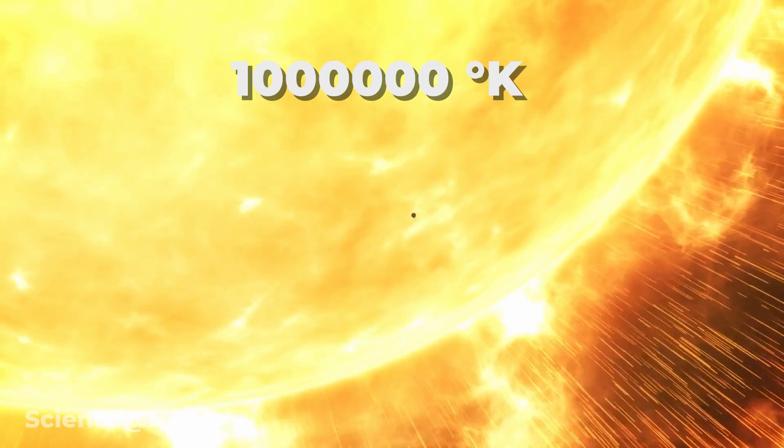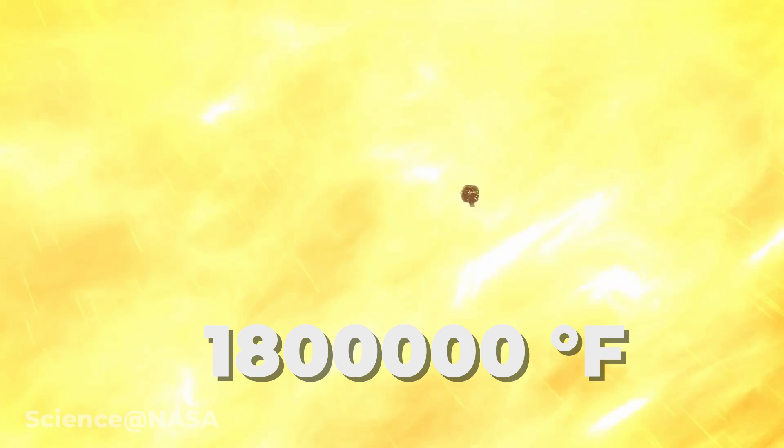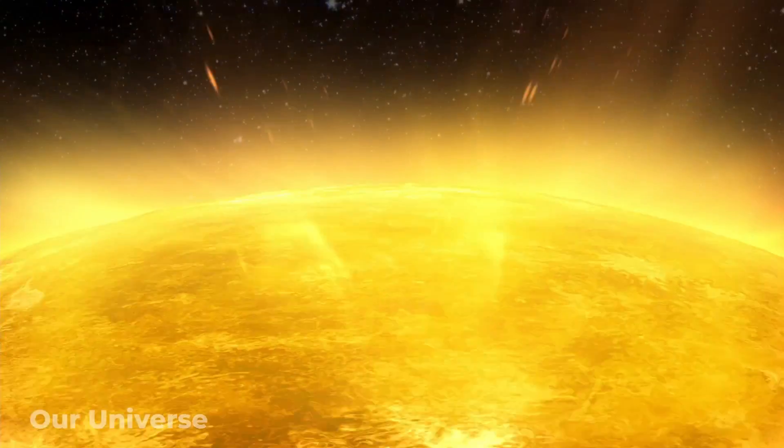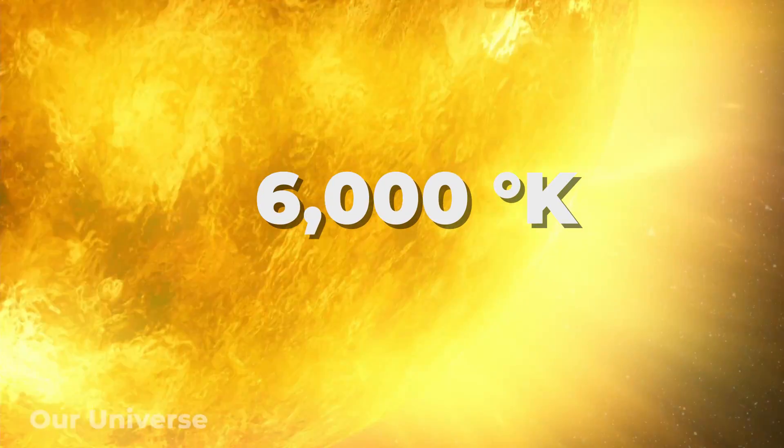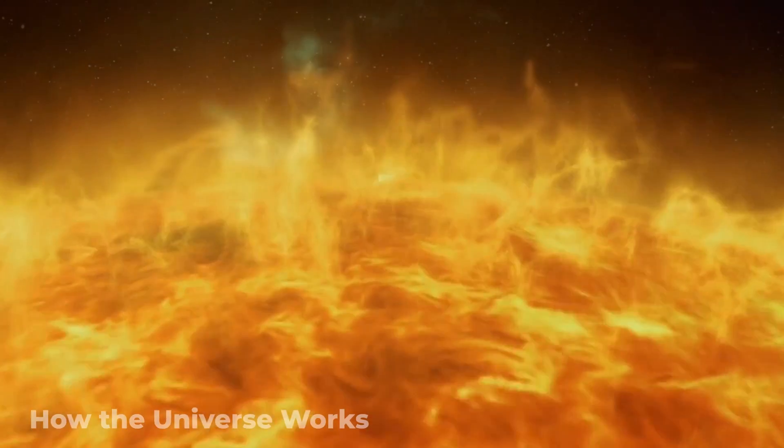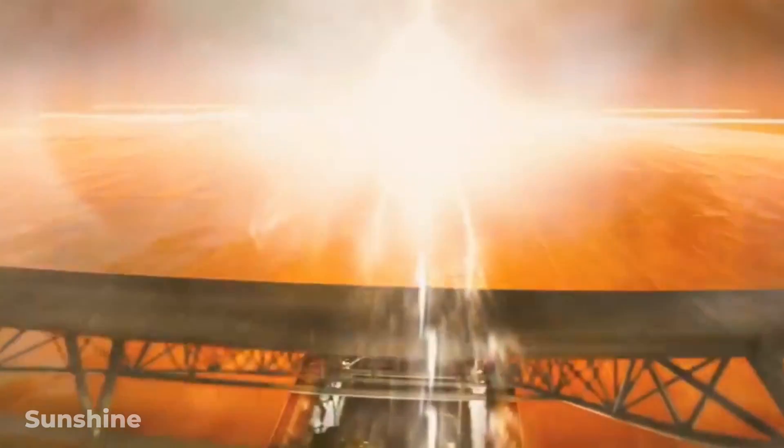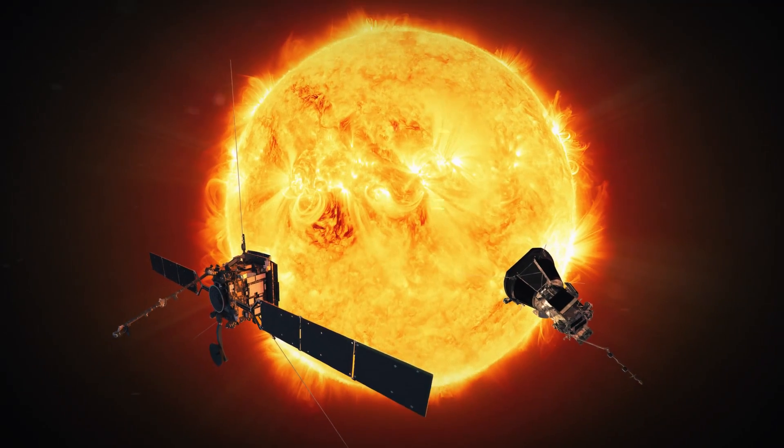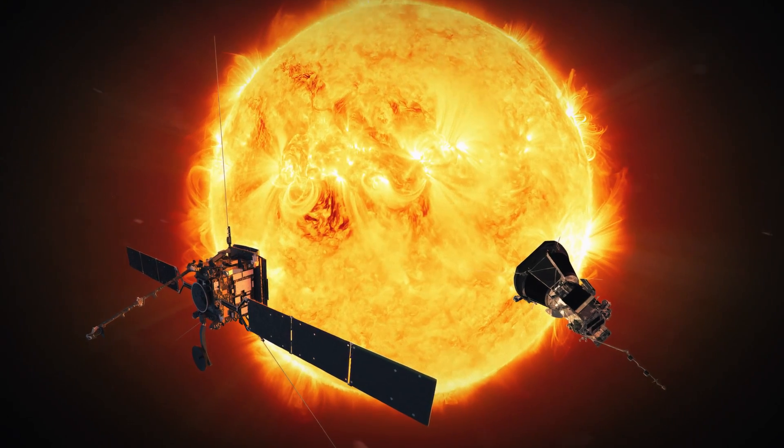The corona is 1 million degrees Kelvin, 1.8 million degrees Fahrenheit, while the star's surface is a comparatively cool 6,000 Kelvin. Now, how does that work? Why is the corona around the Sun actually hotter than its surface? That's just another question the Parker Solar Probe is looking to answer.